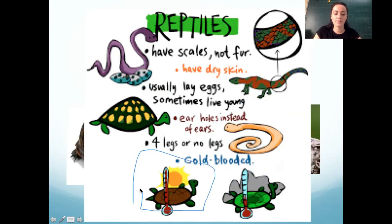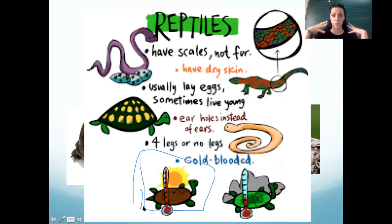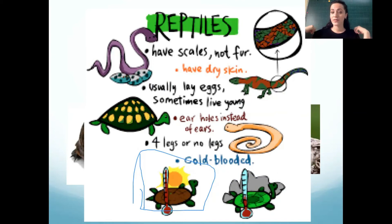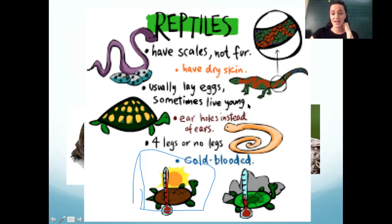Reptiles are cold-blooded, so they have to sit in the sun to get warm. Mammals and birds are warm-blooded — we can make ourselves warm. But reptiles and fish are cold-blooded and have to go in the sun to get warm.